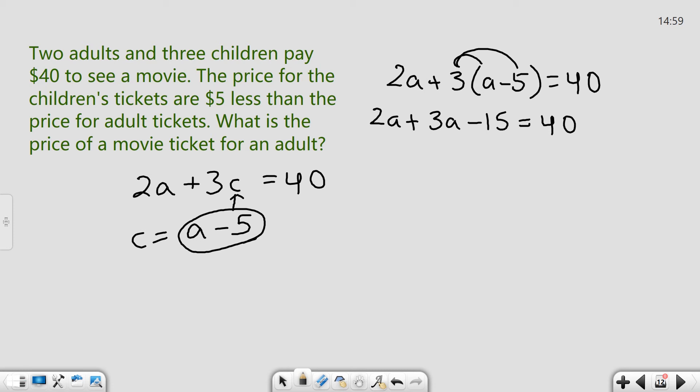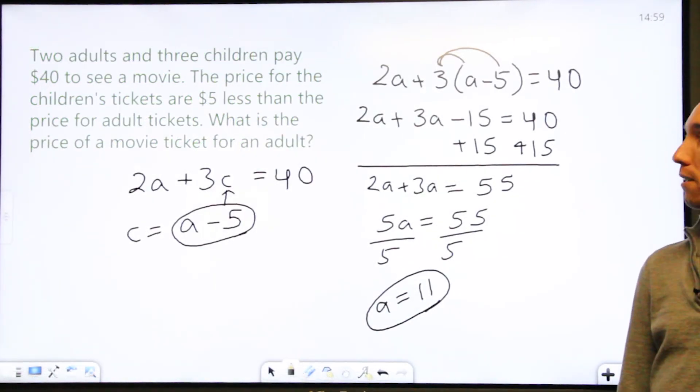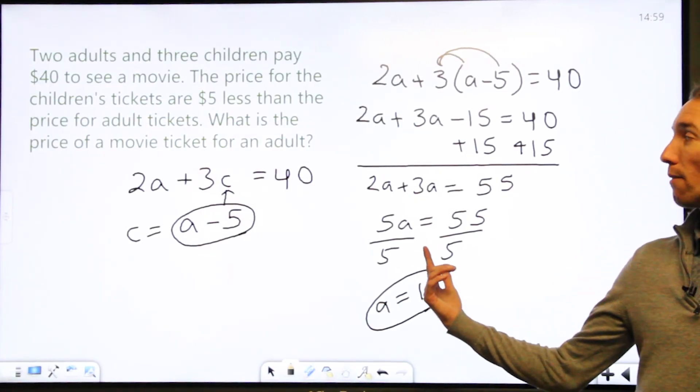Now I'm going to bring my minus 15 over to the right because I want to get my numbers on one side and my variables on the other. And I'm going to start simplifying this a little more. 2A plus 3A equals, let's see, 55. And then I'm going to take my 2A plus 3A and that's going to get me 5A equals 55. Now I can solve this using one more step. I'm going to divide by 5 and I'm going to get A equals 11. That means the price for an adult is going to be $11 because A represents the value of a ticket for an adult.